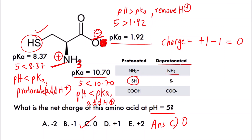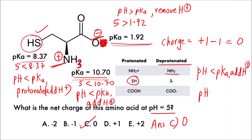In this way you can calculate the charge of any amino acid at any pH, provided you have the pKa values. We will solve more questions in coming videos. There are only two cases to remember: if pH is less than pKa, you protonate (add H+); if pH is greater than pKa, you deprotonate (remove H+). Careful comparison is very important to get the correct answer. Thank you.